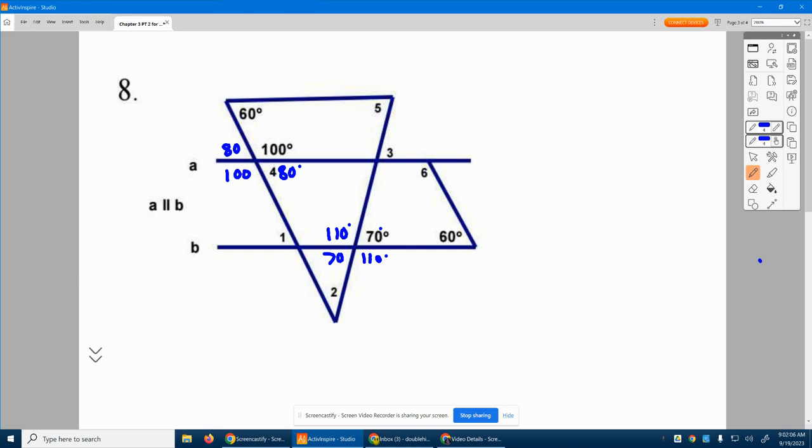Now, do we have parallel lines? Yes, we do. A and B are parallel. Well, if you have parallel lines, let's look and see. Do we have a transversal that cuts through them? Yes, I have one right here that cuts through.